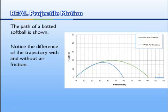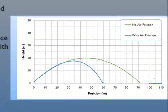Here's another example. This comes from softball. The green graph is the predicted path of a softball without taking air friction into consideration. There, the only acceleration involved is the negative 9.8 for gravity.